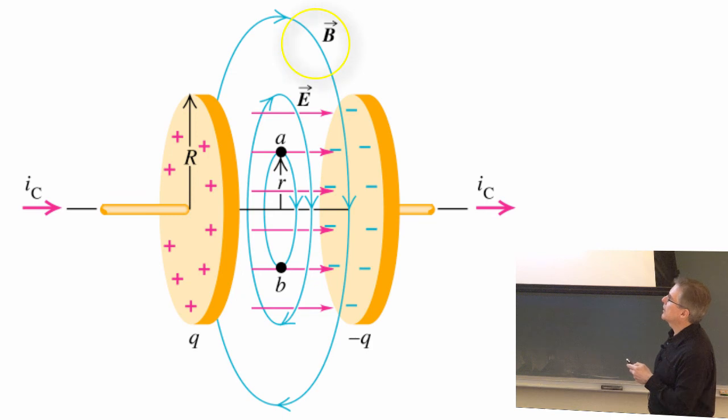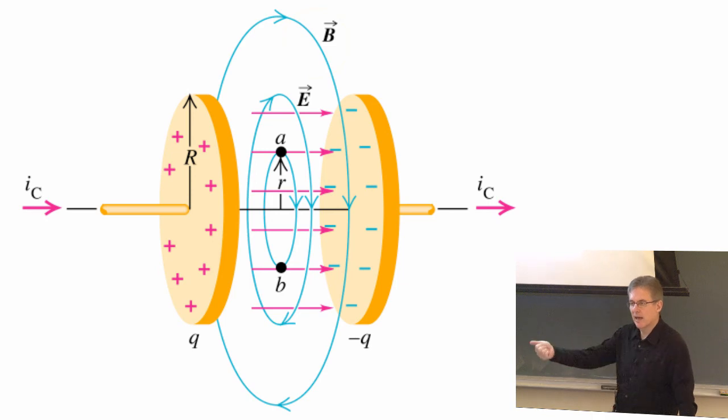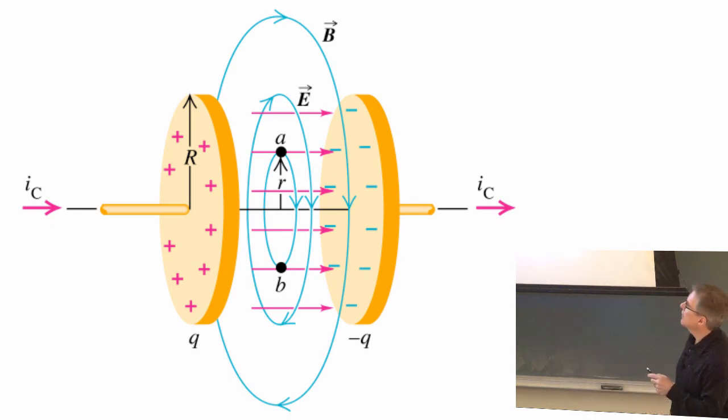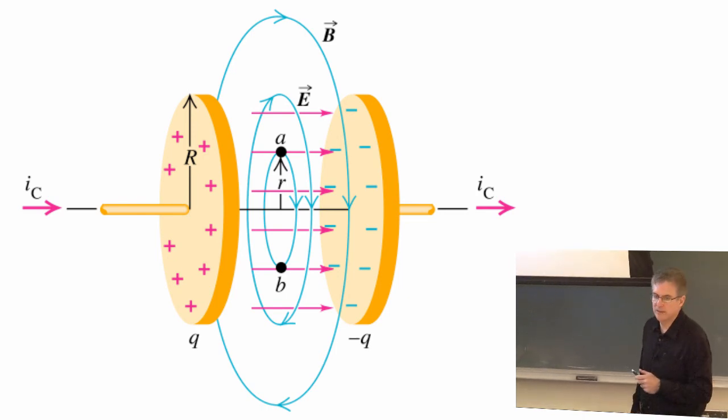What that does is creates magnetic field lines surrounding the electric field lines. Now so far everything we've talked about, the only way to create a magnetic field is to have some, let's say a wire carrying current. Moving charge creates that field by your right-hand rule. Here we've created a magnetic field only by changing the electric field in that region. There's no current flowing in between the plates, just an increasing electric field.